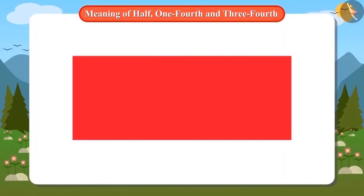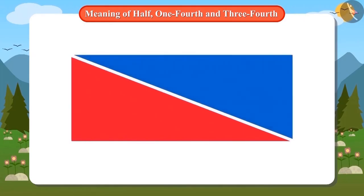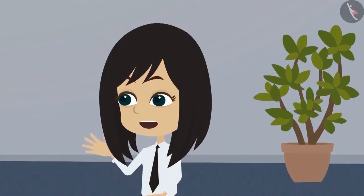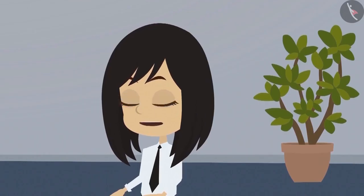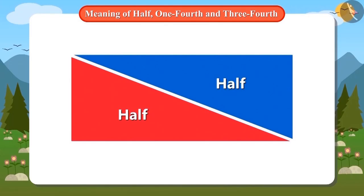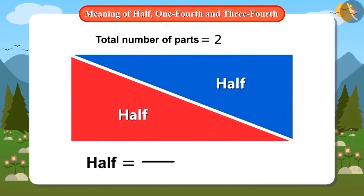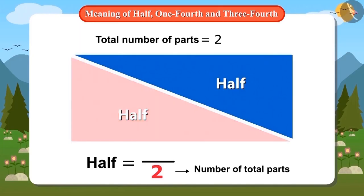Look, this is a rectangle. When it is divided into two equal parts, then one part is called half of this entire shape. But ma'am, how to write it as a number? Very easy. First, we will see how many parts of the whole object there are. There are a total of two parts of this entire rectangle, and we will draw a line to show it and write two below it. Now tell me, how many of these two parts will be called half? Madam, one of these two parts will be called half.